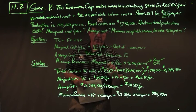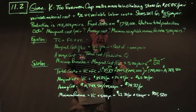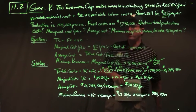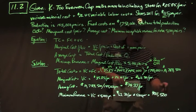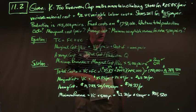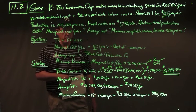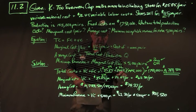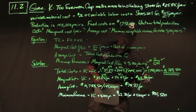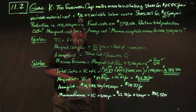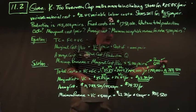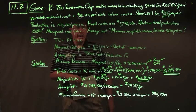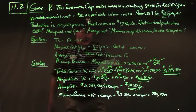Total cost: variable cost ($35.85 material plus $26.45 labor) times 145,000 pairs gives total variable cost, plus fixed cost of $1,750,000, yielding total cost of $10,783,500. Marginal cost per pair is $35.85 plus $26.45 equals $62.30 per pair. Average cost is $10,783,500 divided by 145,000 pairs, giving $74.37 per pair.